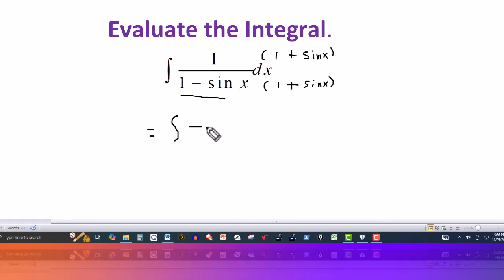So obviously in the numerator, 1 times 1 plus sine of x is going to be 1 plus sine of x. In the denominator I had the difference and the sum of 1 and sine. 1 minus sine of x, 1 plus sine of x. So that's just going to be 1 minus sine squared of x. And you have this.